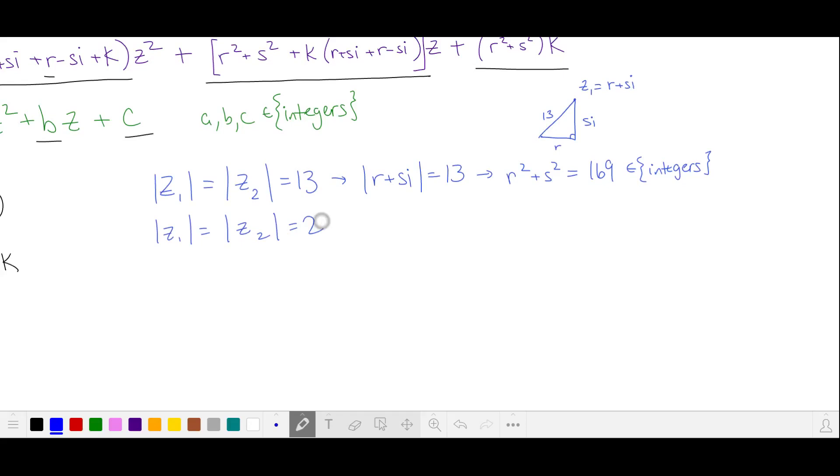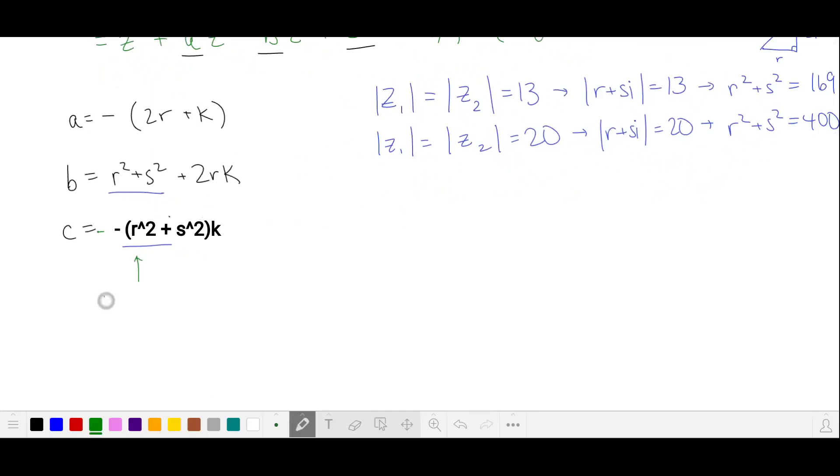And similarly, if our magnitude is 20, then r squared plus s squared is also an integer. Returning to our equations, we have that r squared plus s squared is an integer. And in the problem statement, c is an integer, which means this k is also an integer.